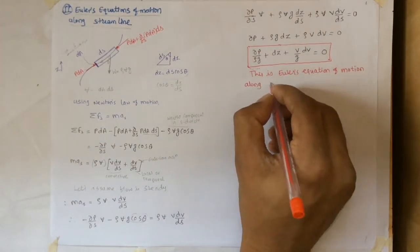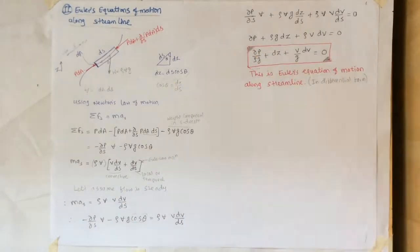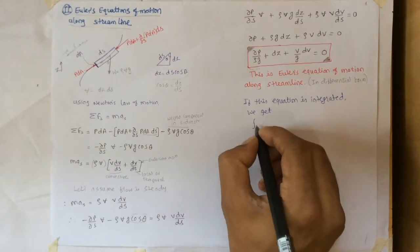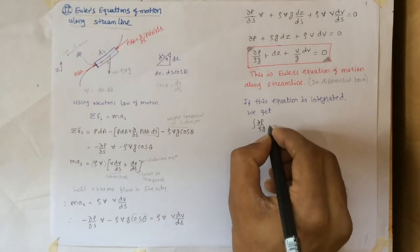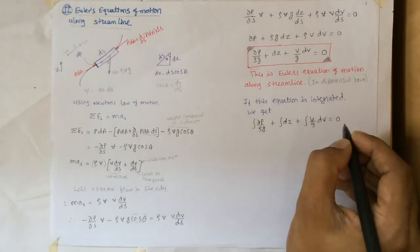If this equation is integrated we get integration of dp/(rho g) plus integration of dz plus integration of v/g dV equals to integration of zero.